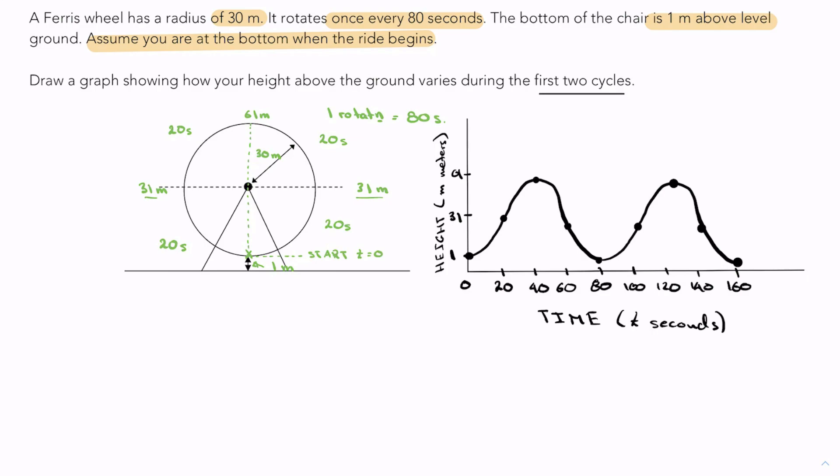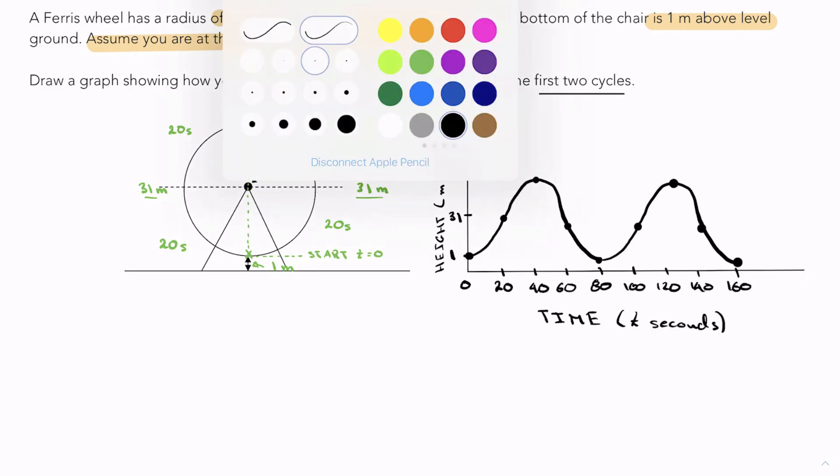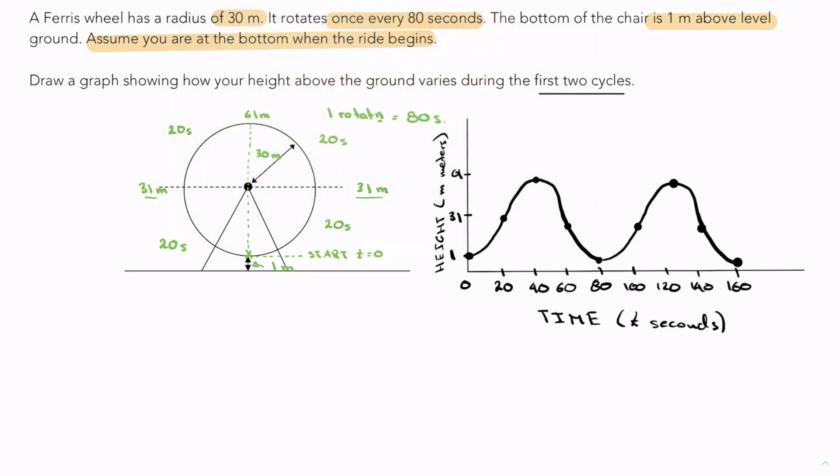But you can see some information here, namely the sinusoidal axis, which is going to kind of cut right through the middle, right there. You have your maximum value, which is over here, which is going to be 61.